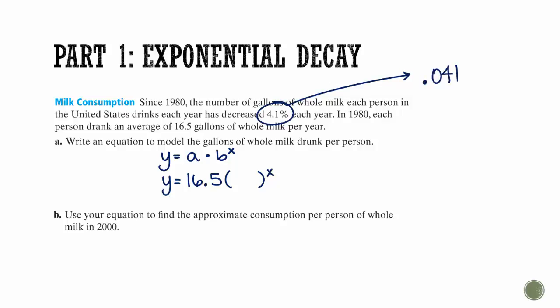If we just plug in 4.1%, which, remember, is 0.041, that would mean that every year it only has 4.1% people drinking milk, where this is saying that the number of gallons has decreased by this. So what we always have to think is that you start with 100%, or you can say just 1. And if something's decreased by this, we want to subtract. So we end up with a growth factor, or a decay factor, however you want to say it, of 0.959.